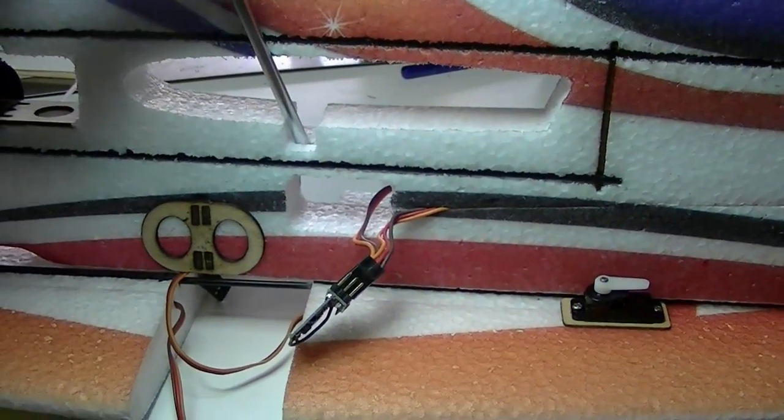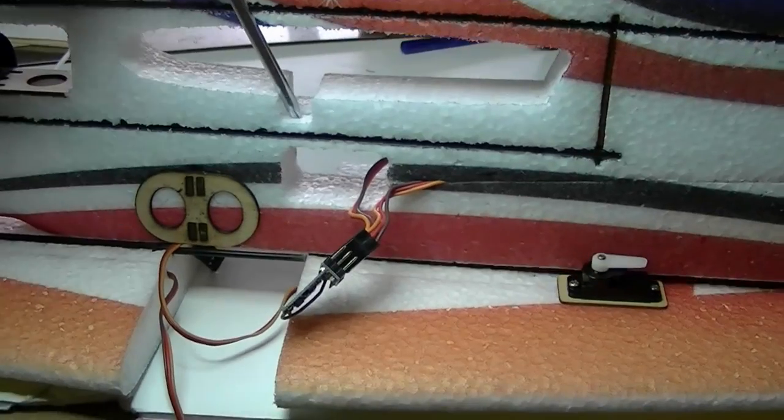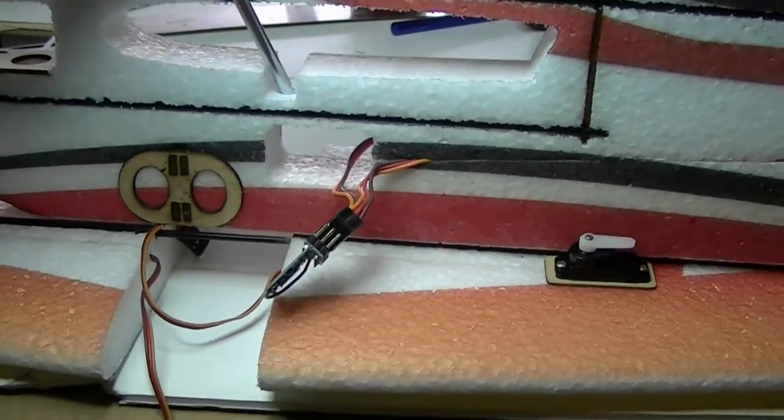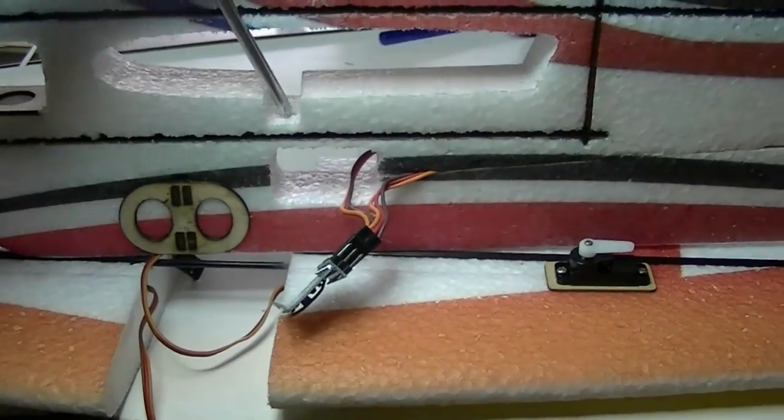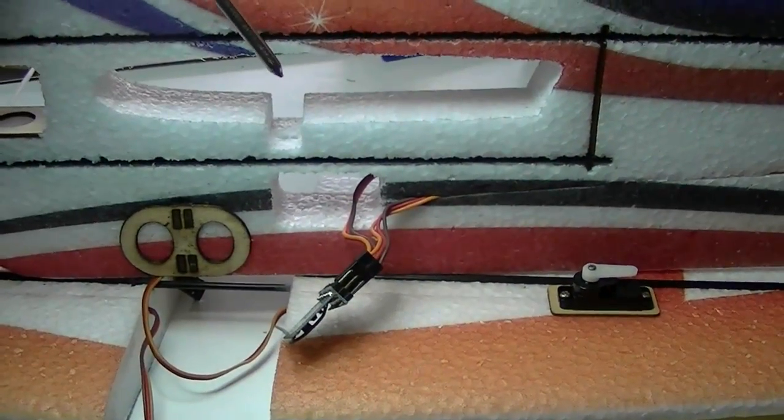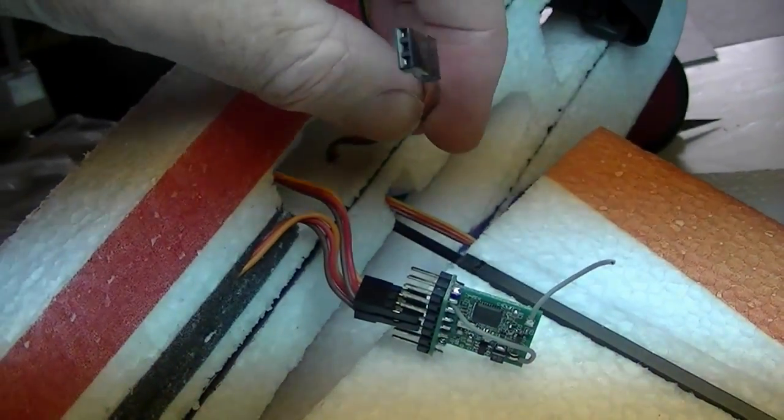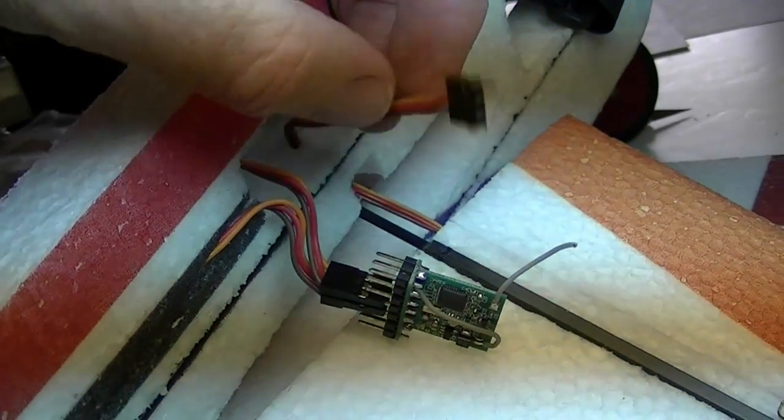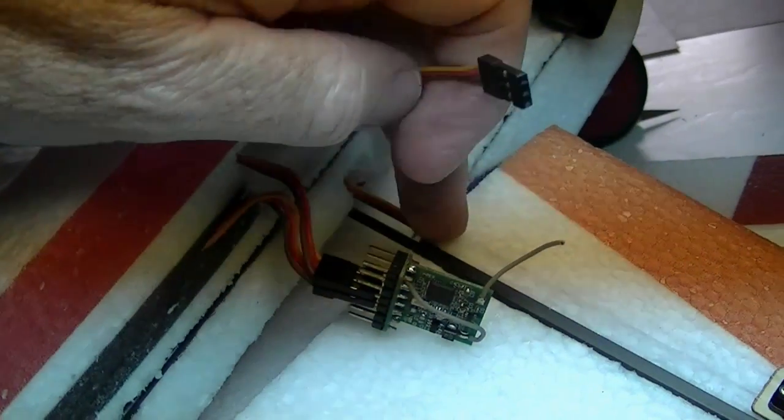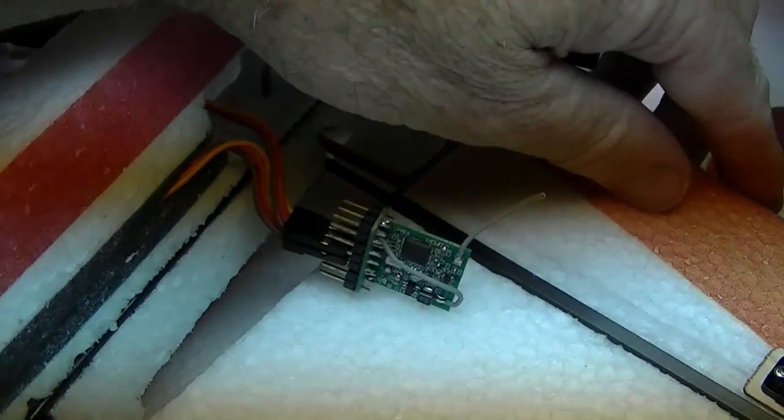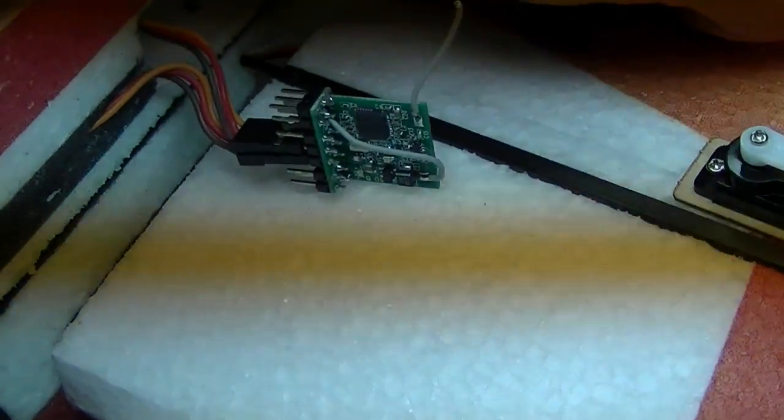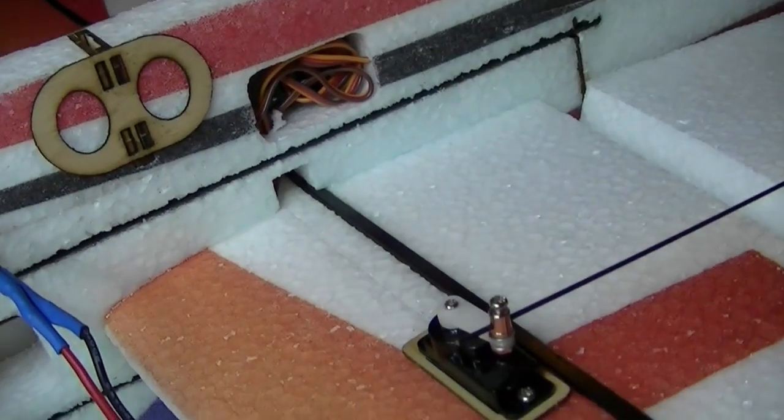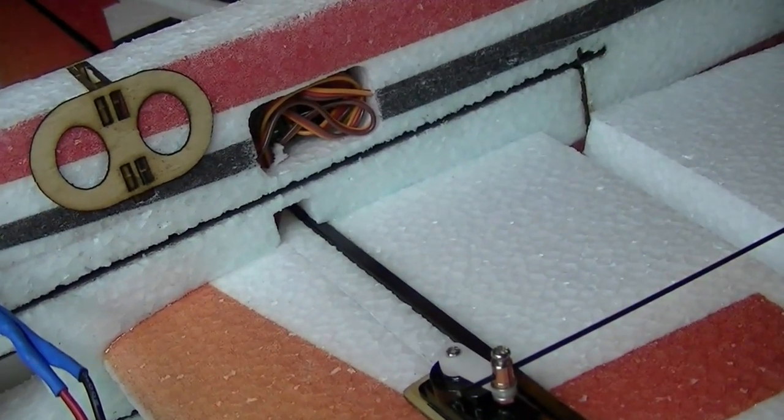Making a hole for the wing servo wires to go through so they can get to the receiver. I've fed the wire through the fuselage from the wing servo. And now I'm just inserting the wing into the slot. The wing is inserted now.